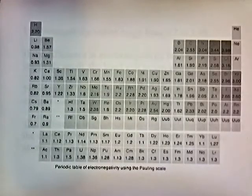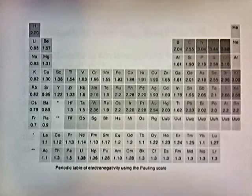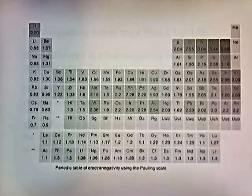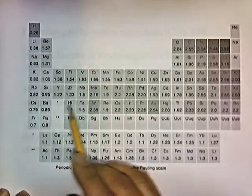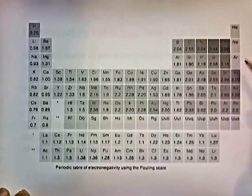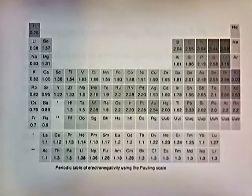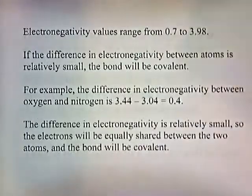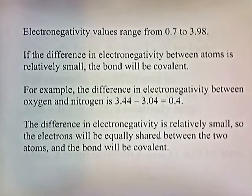Here is a chart of electronegativity. Be aware that different textbooks sometimes have different values for electronegativity. Electronegativity is the ability of an atom to pull electrons towards itself when those electrons are shared between atoms. As you go from left to right across the chart, electronegativity increases. The bigger the electronegativity number, the greater its ability to pull electrons towards itself. Electronegativity values range from 0.7 to 3.98.